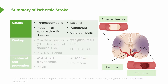Lacunar strokes are small vessel strokes. A lacune is an island — this is an island of stroke deep in the brain, often in the subcortical gray matter or white matter tracts. These small strokes form on small blood vessels called perforators, such as the thalamostriate perforators and other small vessels in and around the brain. Longstanding hypertension is an important risk factor.